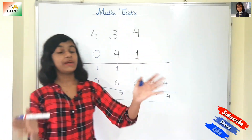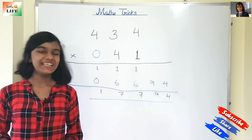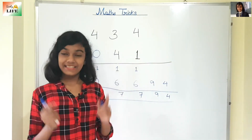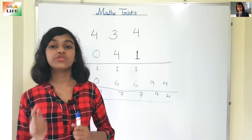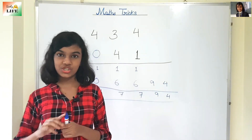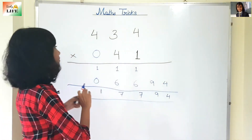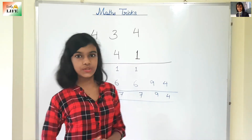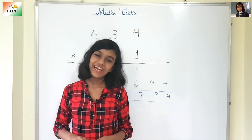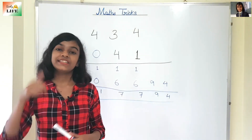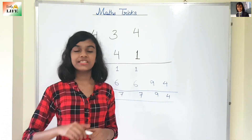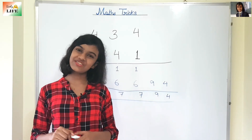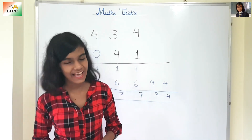So you can multiply a 3-digit number with a 2-digit number — isn't it interesting? In the next video I am going to come back with a 4-digit multiplication trick, meaning 4 digits multiplied with 4 digits. If you like this video then click on the like button, and to stay with me please click on the subscribe button. Thank you.